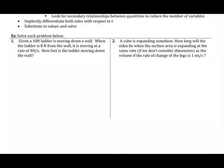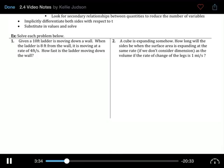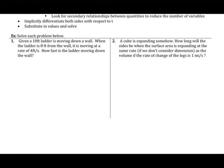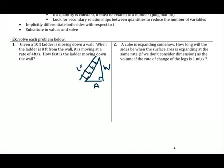Problem 1: a 10-foot ladder is moving down a wall. When the ladder is 8 feet from the wall it is moving at a rate of 4 feet per second. How fast is the ladder moving down the wall? First, draw a picture: the ladder leans against the wall, forming a right triangle with sides labeled L for ladder, W for wall, and A for the third side.